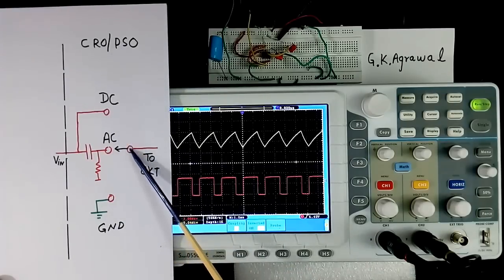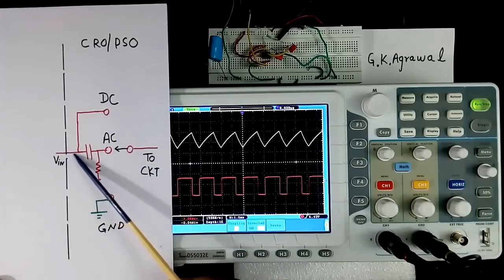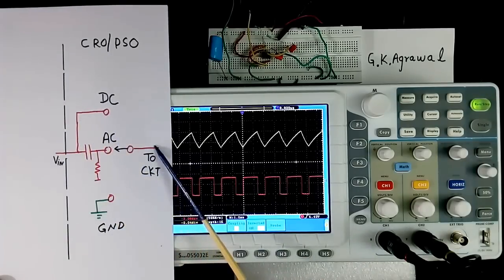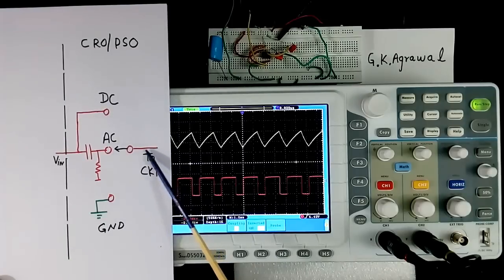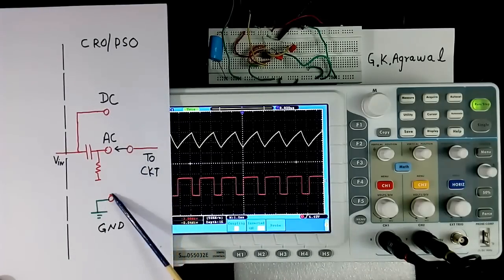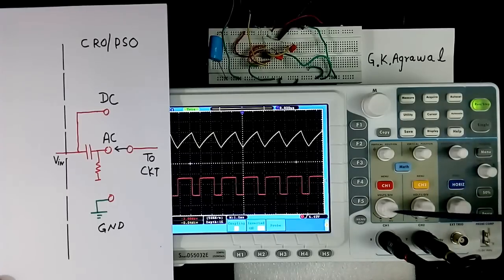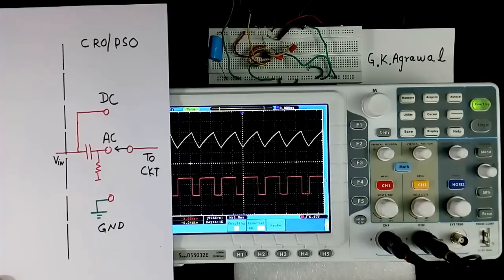In third case, if we select DC, signal will go directly. AC and DC, all will go. And this selection is different for both channels. In my case selection is here. In some CRO, selection may be here, here or here. Depending on CRO, method of selection will be different. But concept is same.